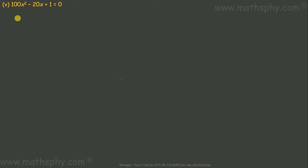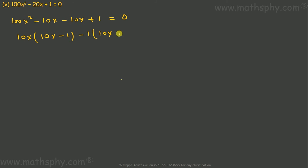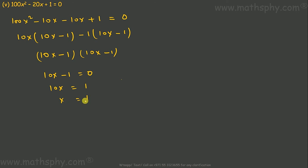For the fifth equation: 100x² - 20x + 1 = 0, which gives 100x² - 10x - 10x + 1 = 0. Taking 10x as common: 10x(10x - 1) - 1(10x - 1) = 0, so (10x - 1)(10x - 1) = 0. Therefore 10x - 1 = 0, giving x = 1/10. Both roots are 1/10 for this quadratic equation.